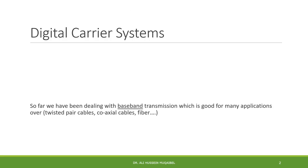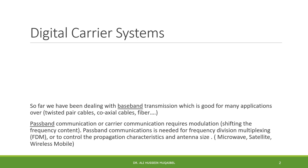Let's look at digital carrier systems. So far we have been dealing with baseband transmission, which is very good for applications over cable like twisted pair, coaxial cables, and fiber. But it's not always possible to use baseband. For example, we have to use passband communication, or what we call carrier communications, which requires modulation. We need this for frequency division multiplexing, to control propagation characteristics, or when we have more than one signal — all of these require changing the frequency. Applications that require passband include any wireless communication where we want to control the size of the antenna, microwave applications, satellite, wireless, and mobile.